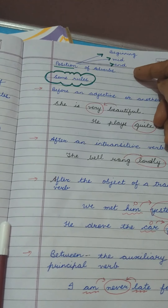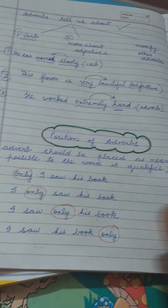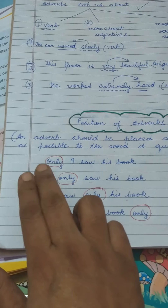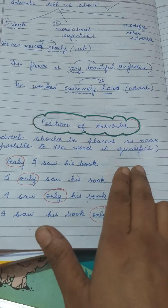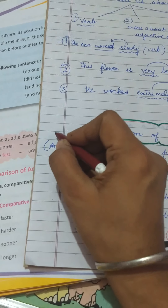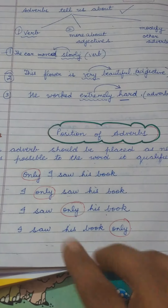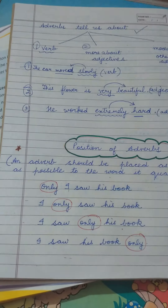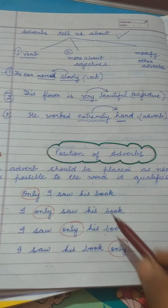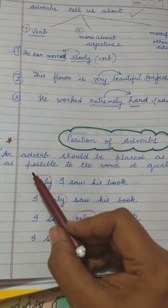In the beginning, in the middle, or at the end — that is the position of adverbs. Generally, an adverb should be placed as near as possible to the word it qualifies. This is the main rule. Let me explain with an example — this is really very interesting and you'll come to know the beginning position, the middle position, and the end position.